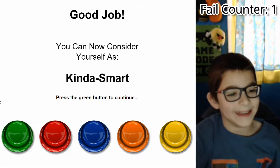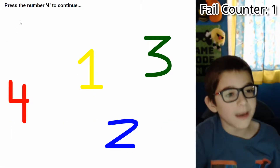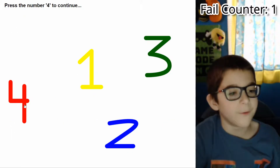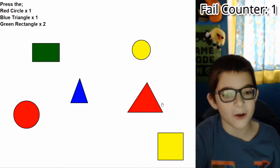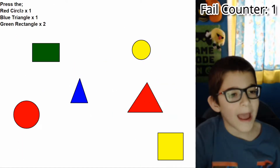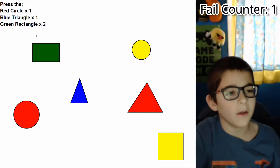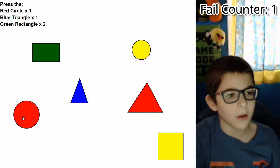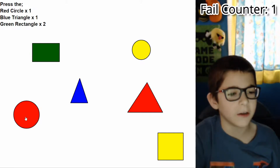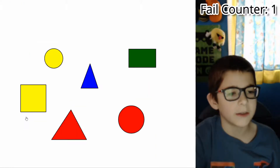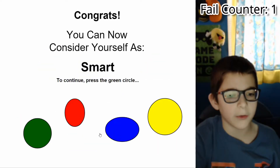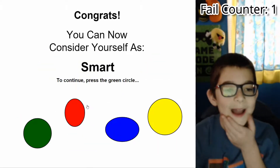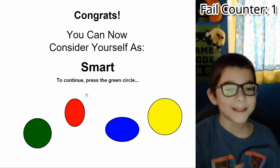Press the green button to continue. Press the number four — that's a four. Hit the oval — that's an oval. Red circle, blue triangle, green rectangle — red circle, blue triangle, green rectangle, red circle, blue triangle, green rectangle twice. You can now consider yourself as smart — I'm smart!